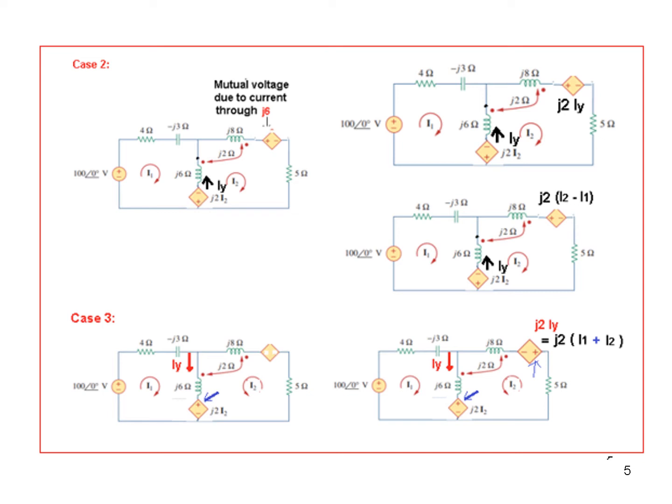We are saying it is Iy. Iy is now entering the non-dotted terminal. That means the non-dotted end will be positive as shown here. So the non-dotted end will now be positive. In the previous case, it was negative.